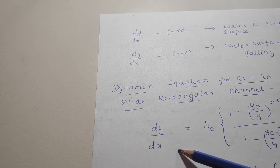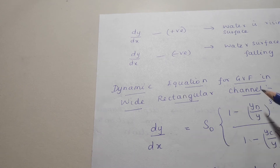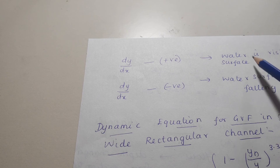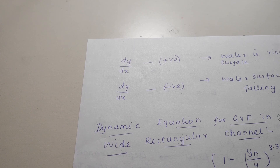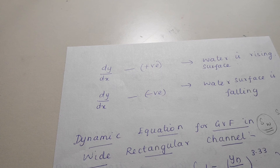In most problems, you will be asked to find the rate of change of flow or the slope of the water surface. You must know dy/dx and S0 to find the water surface slope. If dy/dx is positive, the water surface is rising; if dy/dx is negative, the water surface is falling.